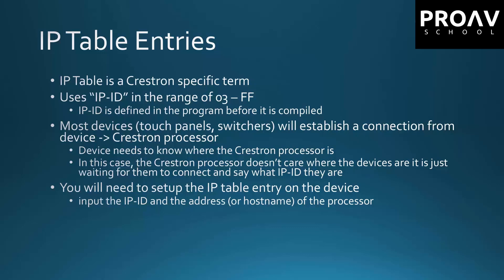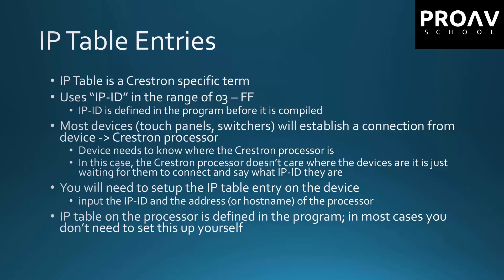If you do need to set IP table entries on the processor, make sure you know what you're doing and why you're doing it. You can screw things up and make it so things are not going to work properly if you try to manually do things on the processor side when the code is expecting it to be a different way. In that case, all you would need to do is reload the code and it would refresh the IP table on the processor. On the device — for example a touch panel — you'll enter the IP ID and the address or hostname of the processor. The IP table on the processor is defined in the program, and in most cases, if you're not the programmer, you shouldn't have to set this yourself.